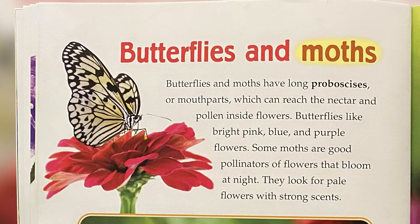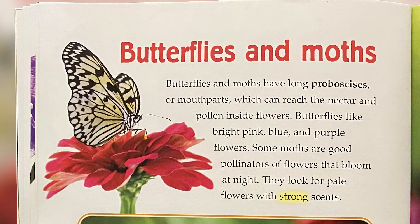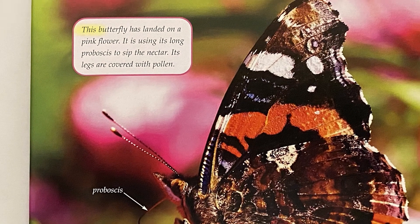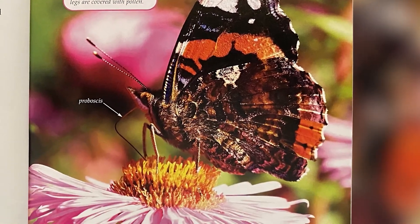Butterflies and moths: Butterflies and moths have long proboscises, or mouthparts, which can reach the nectar and pollen inside flowers. Butterflies like bright pink, blue, and purple flowers. Some moths are good pollinators of flowers that bloom at night — they look for pale flowers with strong scents. The hummingbird moth can pollinate flowers that are too thin and deep for other pollinators; its long proboscis can reach the pollen deep inside them. This butterfly has landed on a pink flower, using its long proboscis to sip the nectar, while its legs are covered with pollen.